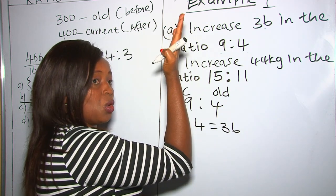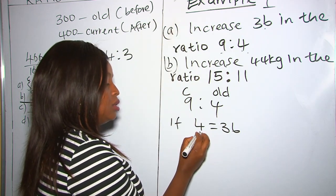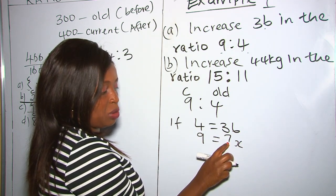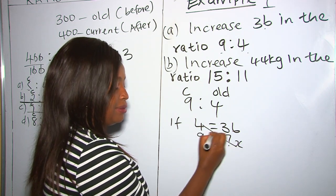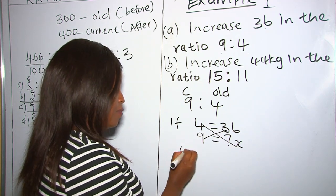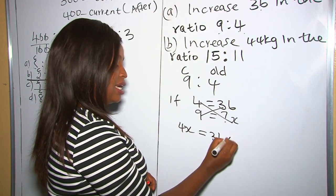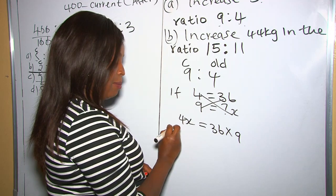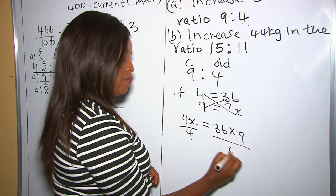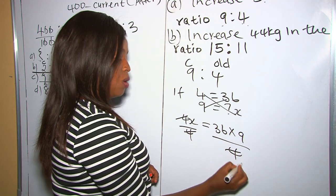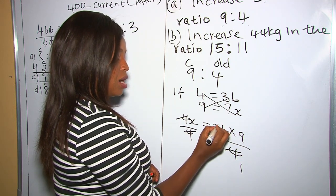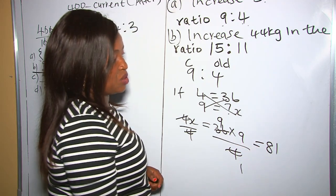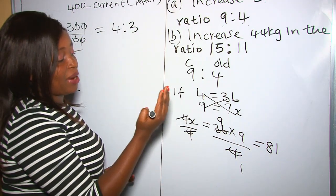The old value is 4 and we want to find the new value corresponding to 9. Our unknown is x. We cross multiply: 4x equals 36 times 9. To find x we divide both sides by 4. So x equals 9 times 9, which is 81. As you can see, our number has increased from 36 to 81.